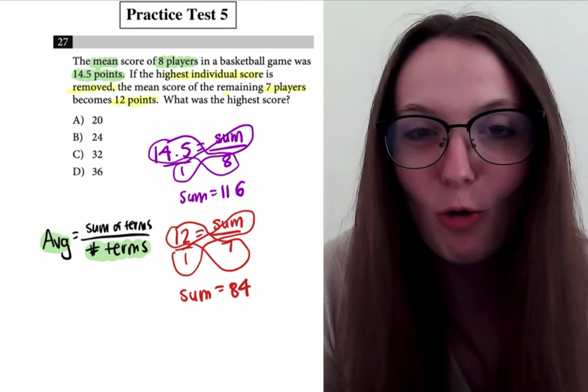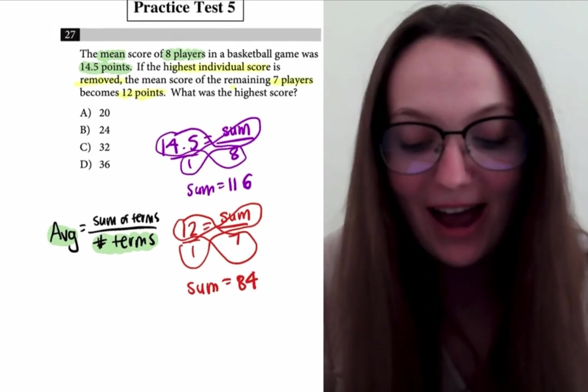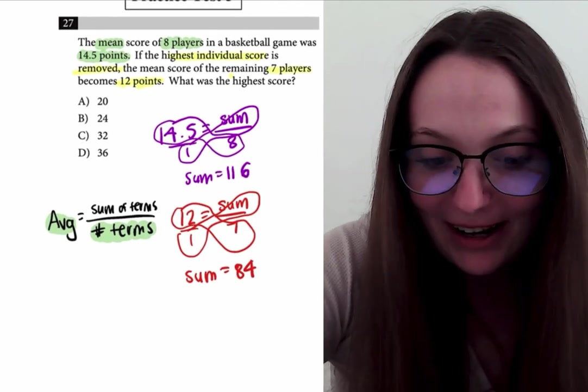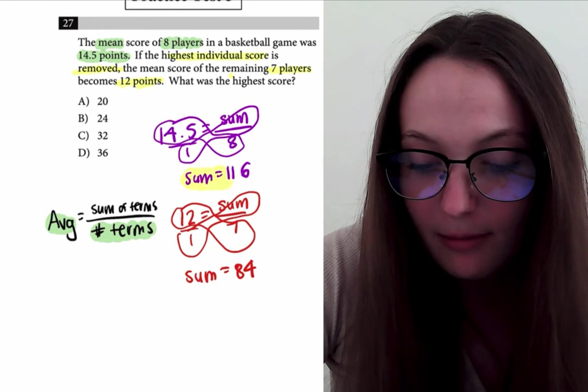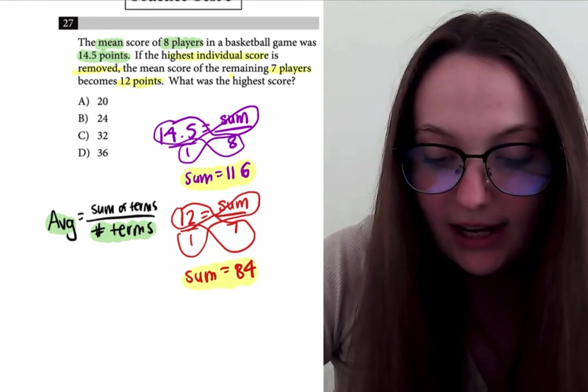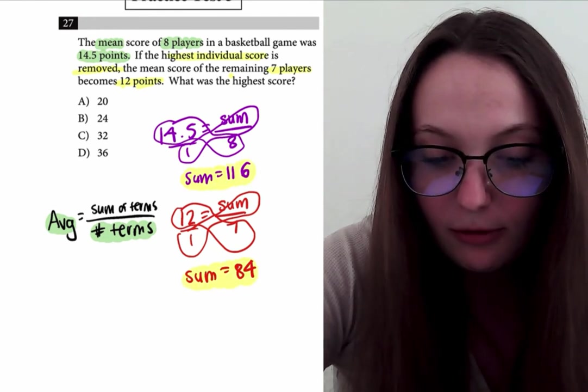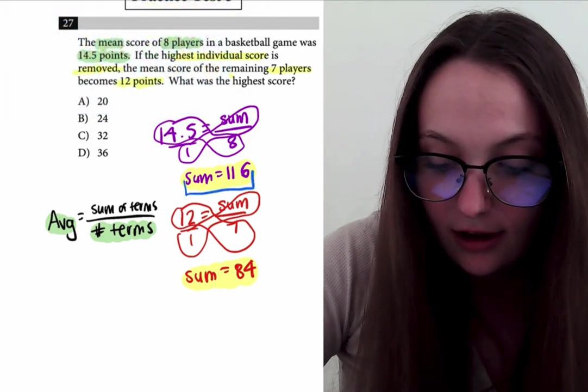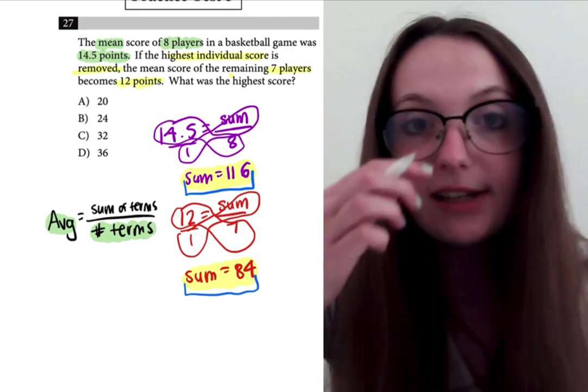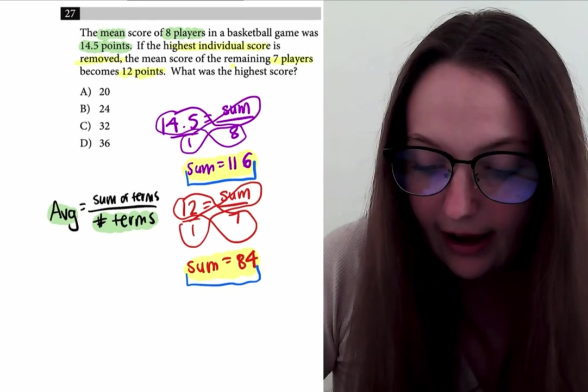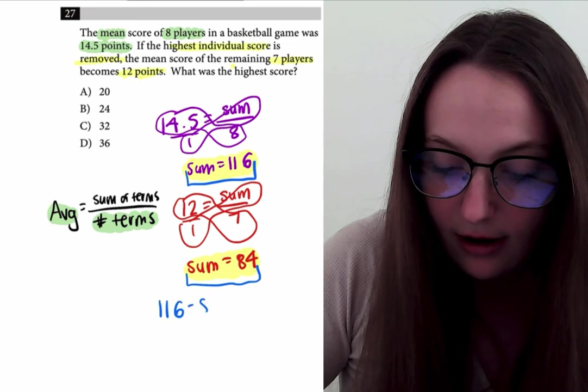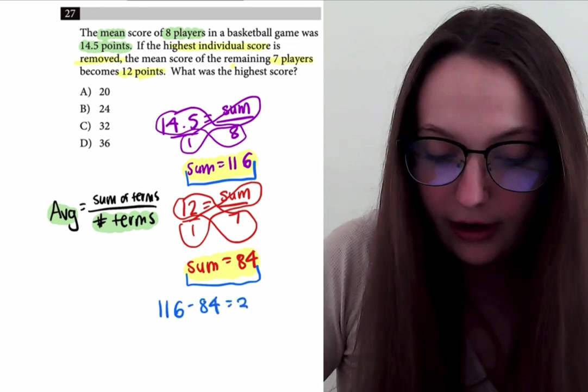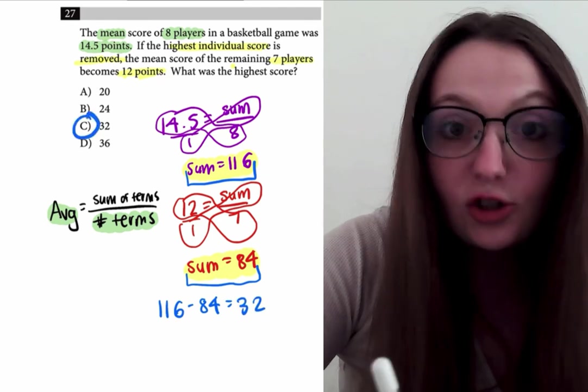Do you guys ever put in the calculator like one plus one just to confirm that? I feel like everybody does that. So we have that the sum originally was 116 and the sum dropped to 84 once we remove the eighth player. So all we got to do right now is just subtract 84 from 116, and that gives us choice C.